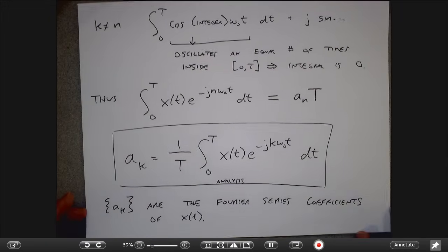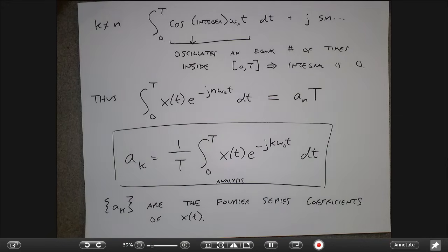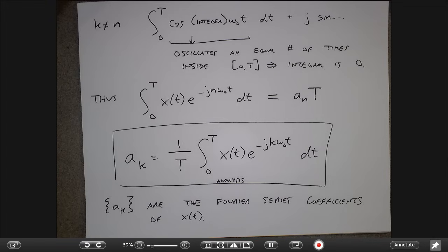These Aₖs are called the Fourier series coefficients, or sometimes the spectral coefficients. One thing to keep in mind is that even though in our class we'll mostly deal with real-valued signals, in general x(t) can be a complex signal, and certainly the Aₖs are going to be complex numbers because there are j's involved. So even if I have a real input, I'll get complex Fourier series coefficients.